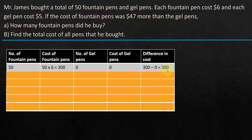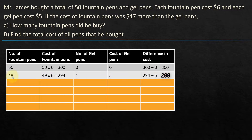Take note that this difference in cost has to be $47 for our answer to be correct. We are way off from $47, so let's decrease the number of fountain pens by one — say 49 fountain pens. The cost is $294, and one gel pen, because 49 plus 1 equals 50. The total number of fountain pens and gel pens should equal 50. The cost of the gel pen is 1 times 5, which is $5. And the difference in cost is $281.